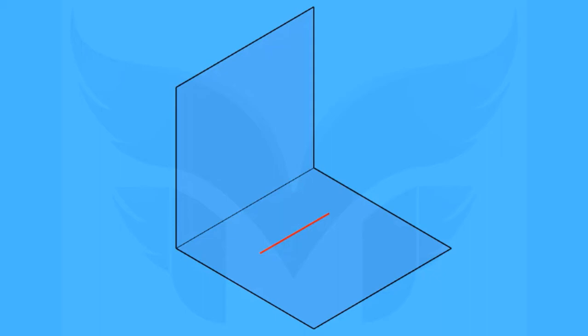Let's call the ends of the line as A and B, and the length of line AB is 150 mm. As the line is resting on the edge P, obviously it is parallel to the edge P. To know whether the line is parallel to the VP or not, we must know the positions of end A and B in front of the VP. Here both ends A and B are equidistant from the VP, which means the line is parallel to the VP. Let's say that end A and B are 100 mm in front of VP.